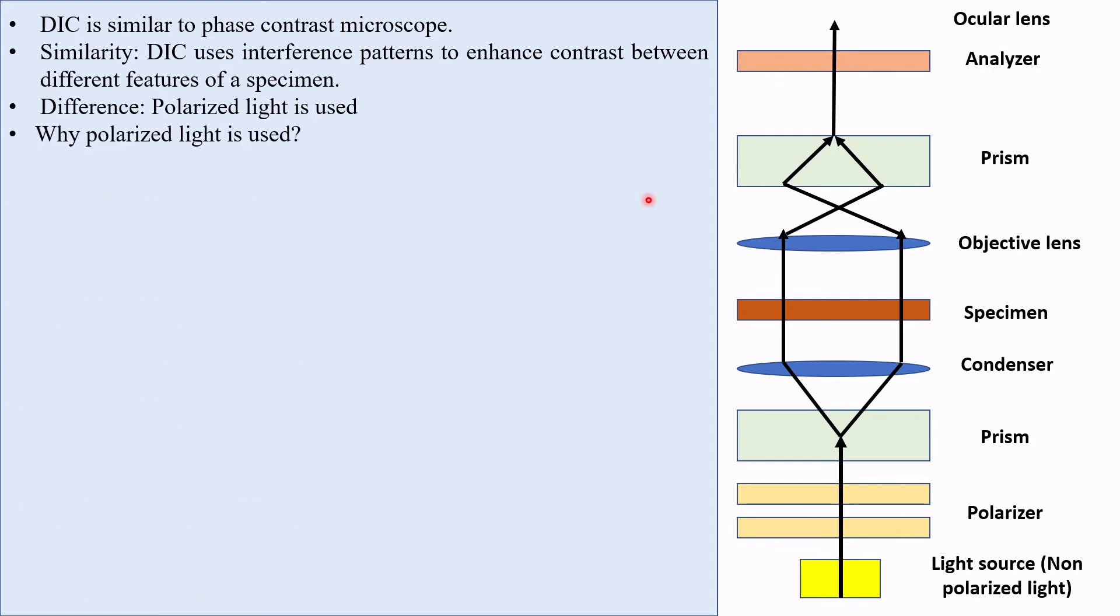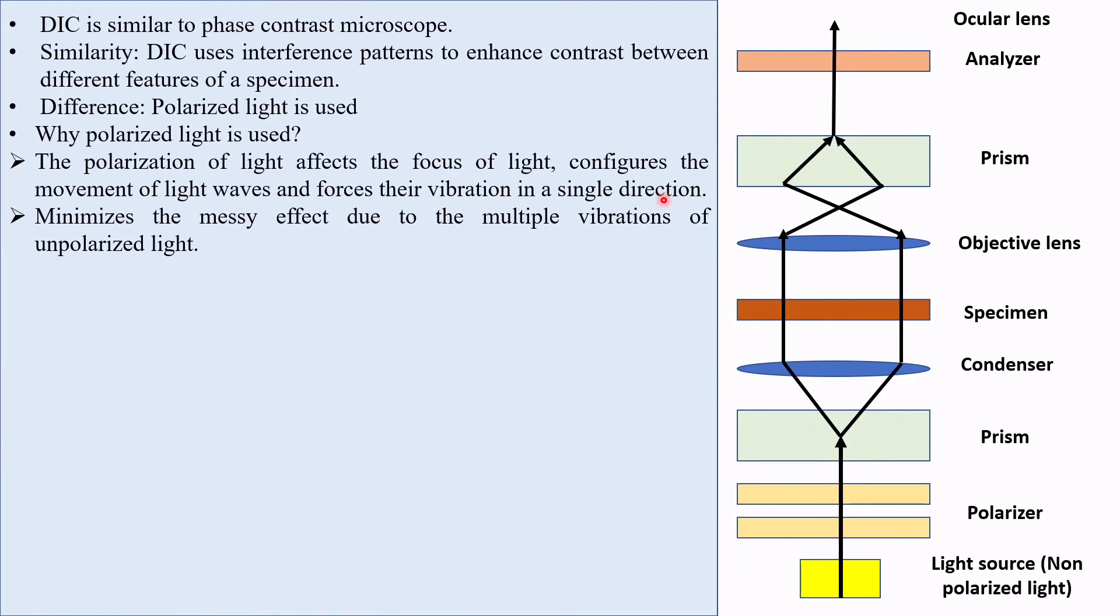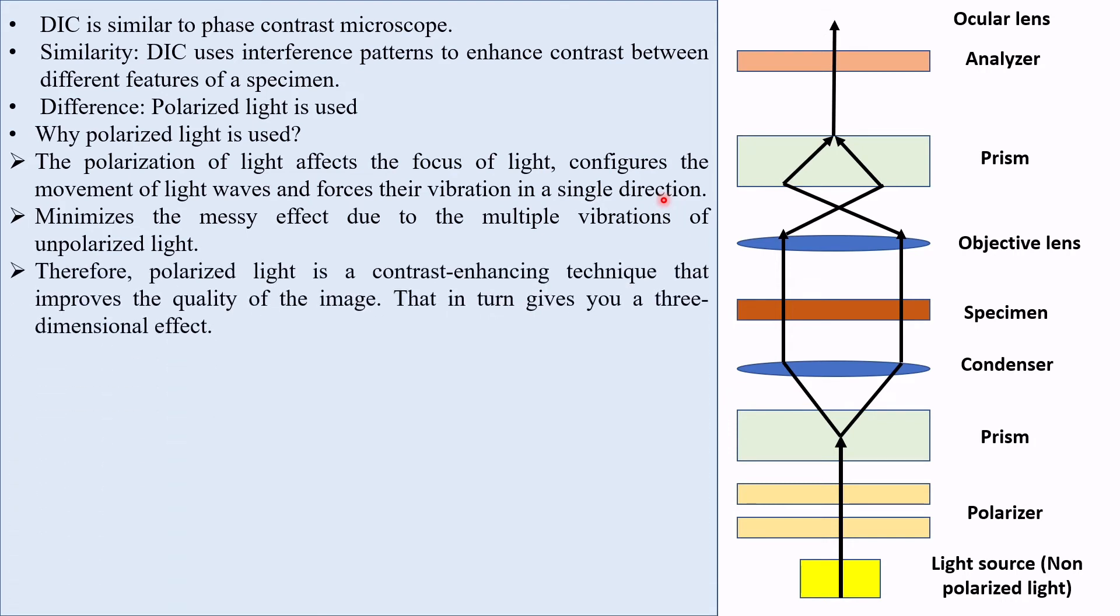Why is polarized light important? The polarization of light affects the focus of light, configures the movement of light waves and forces their vibration in a single direction. It minimizes the messy effect due to the multiple vibrations of unpolarized light. Therefore, polarized light is a contrast enhancing technique that improves the quality of the image, that in turn gives you a three-dimensional effect.